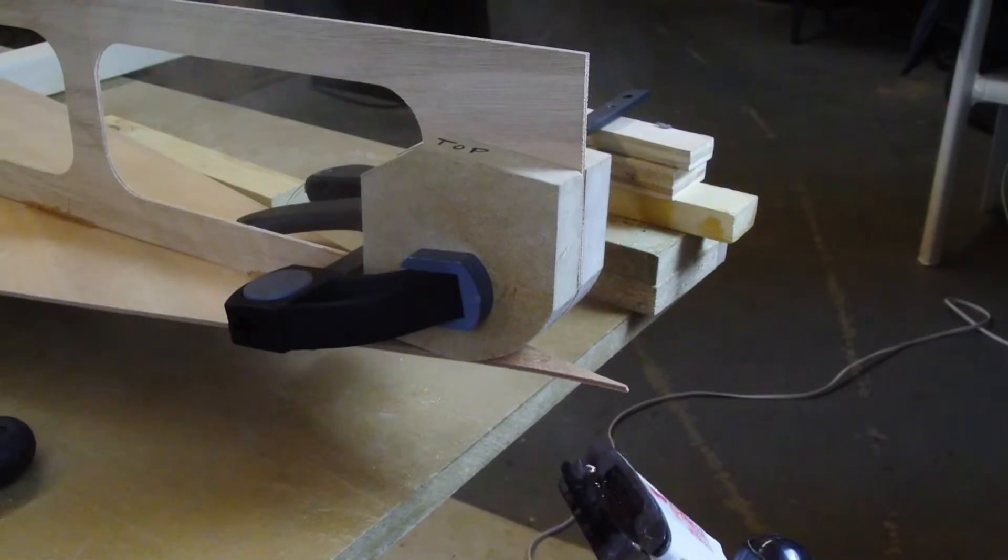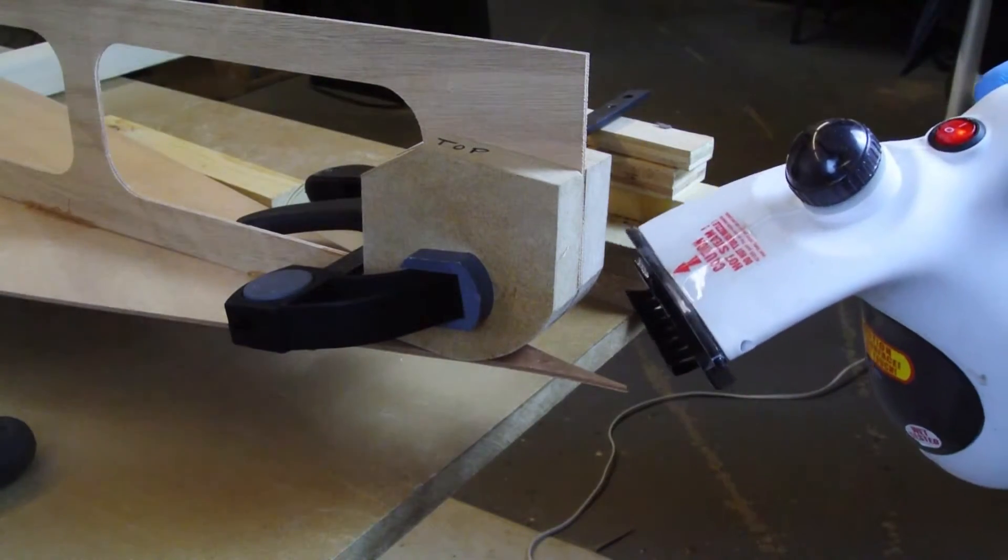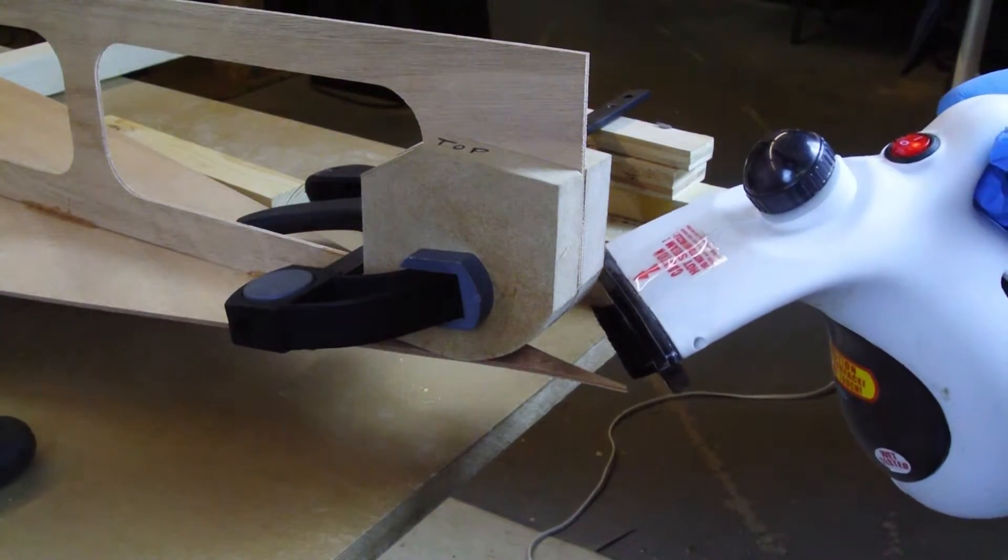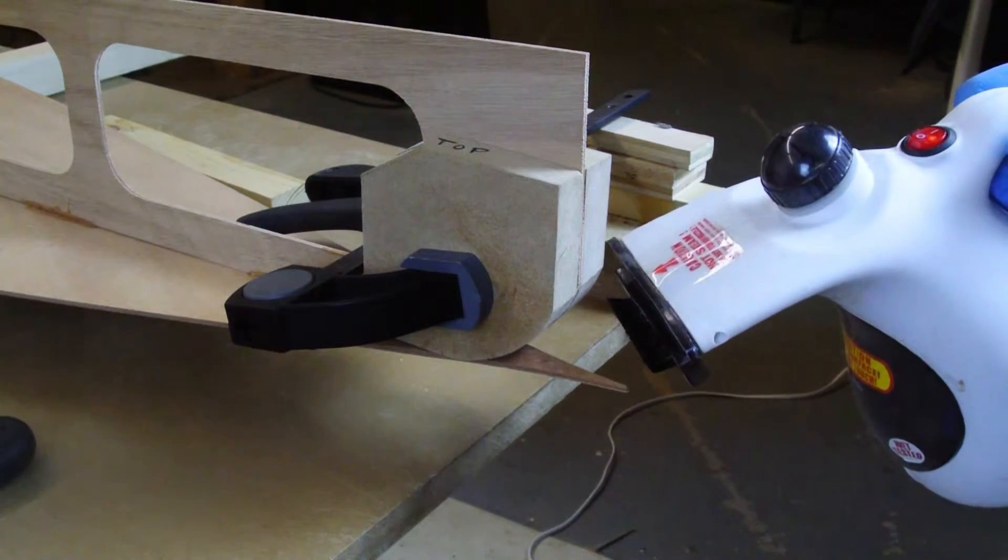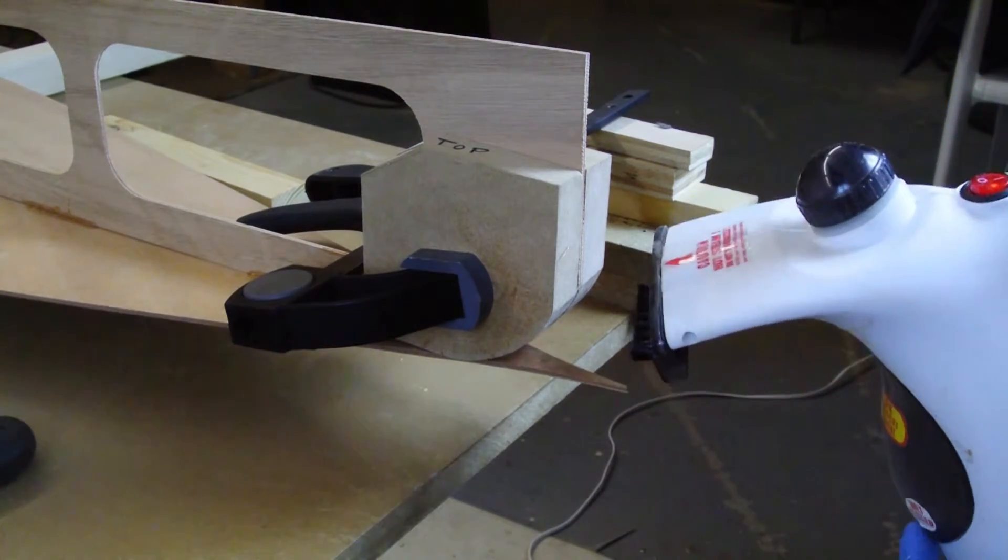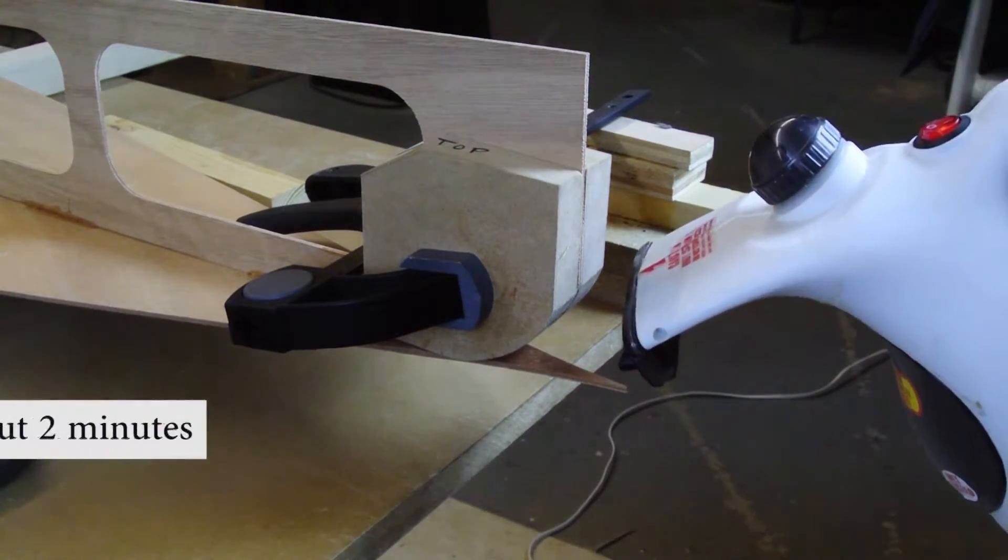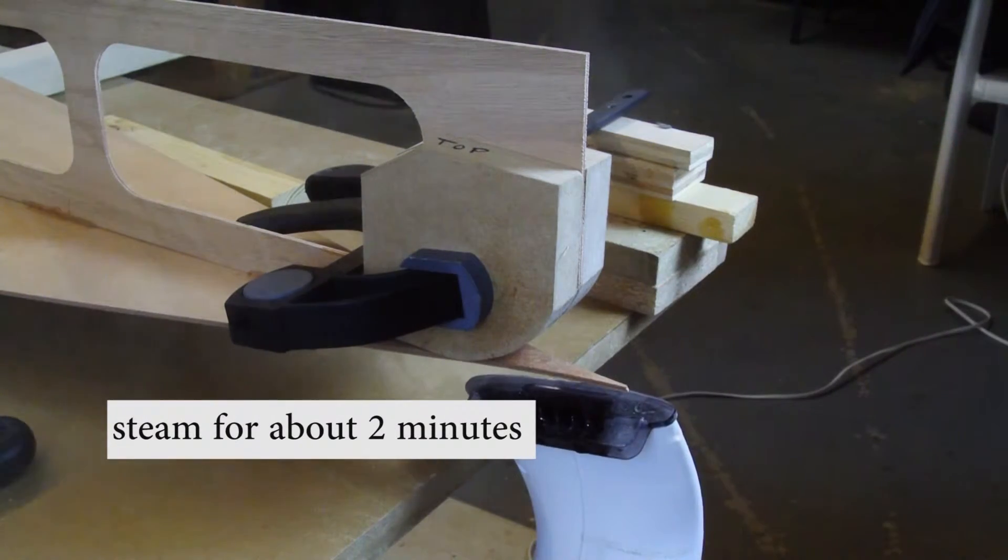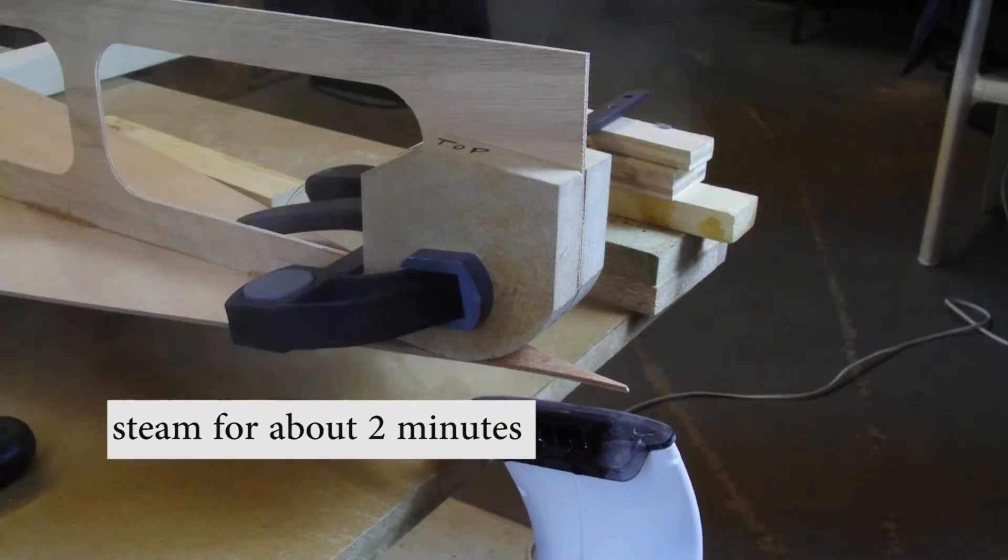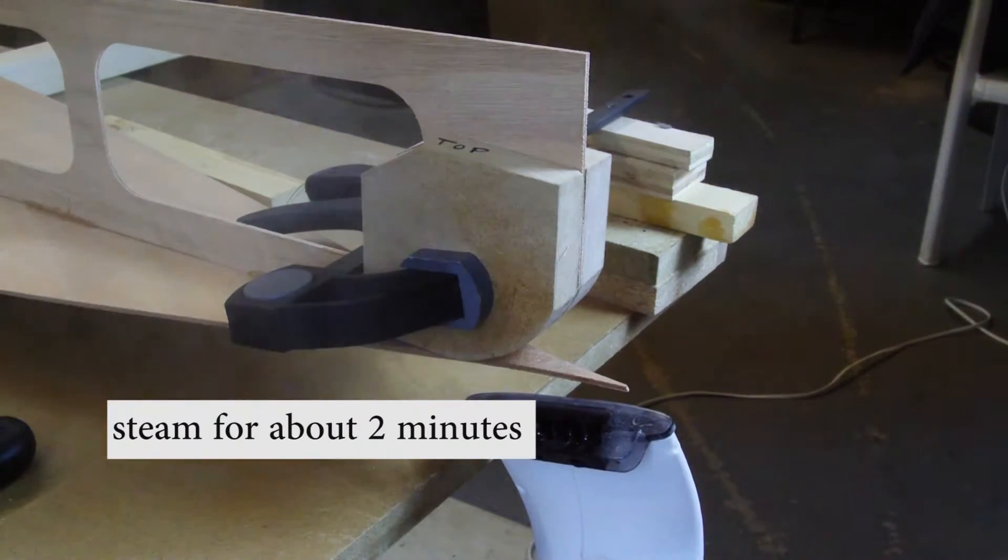Now we can apply the steam. When you're using a fabric steamer be careful to direct the steam at the tip of the bow panel. You should alternate from top to bottom every 10 to 20 seconds. It will take about two minutes to get the wood tip warm enough to bend easily.